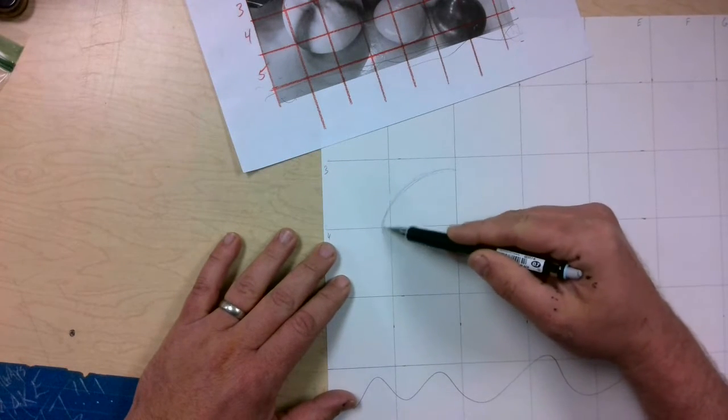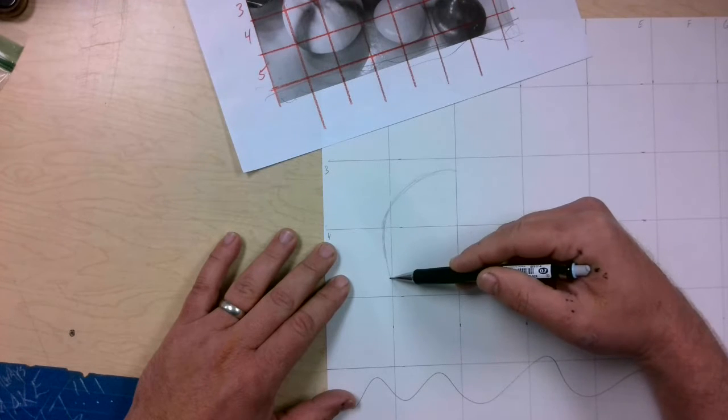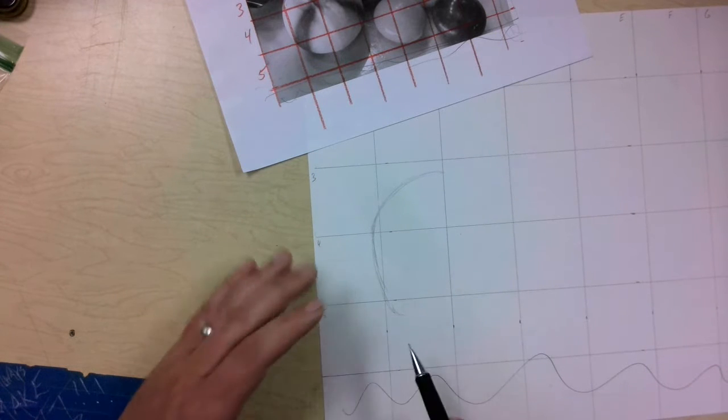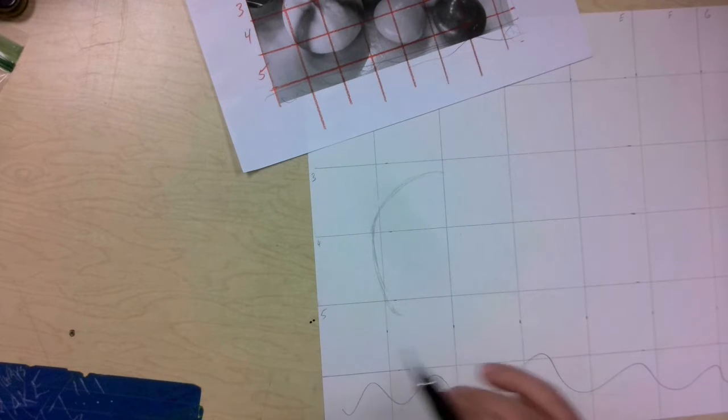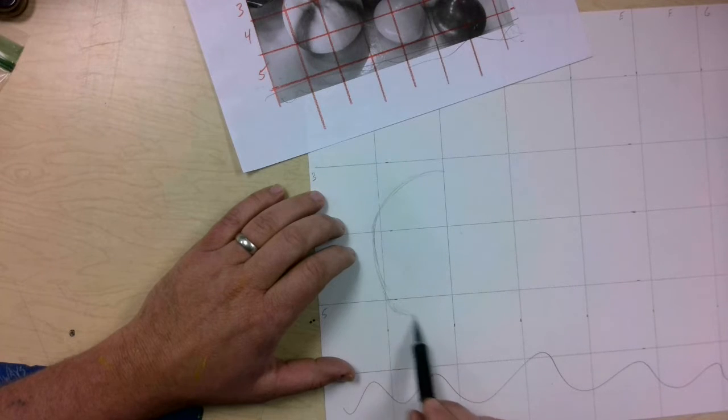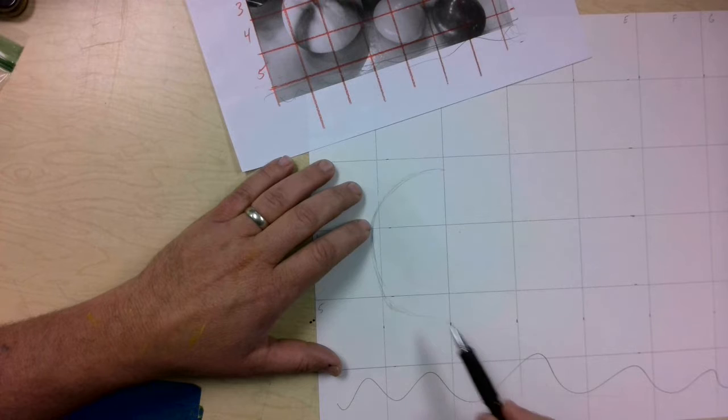And now the other thing is that I forgot to mention is how you want to sketch this, and you want to draw this to be pretty light because we're going to be doing a lot of erasing, and we also don't want to make this look like this was a grid. So eventually we're going to erase all these grid lines.